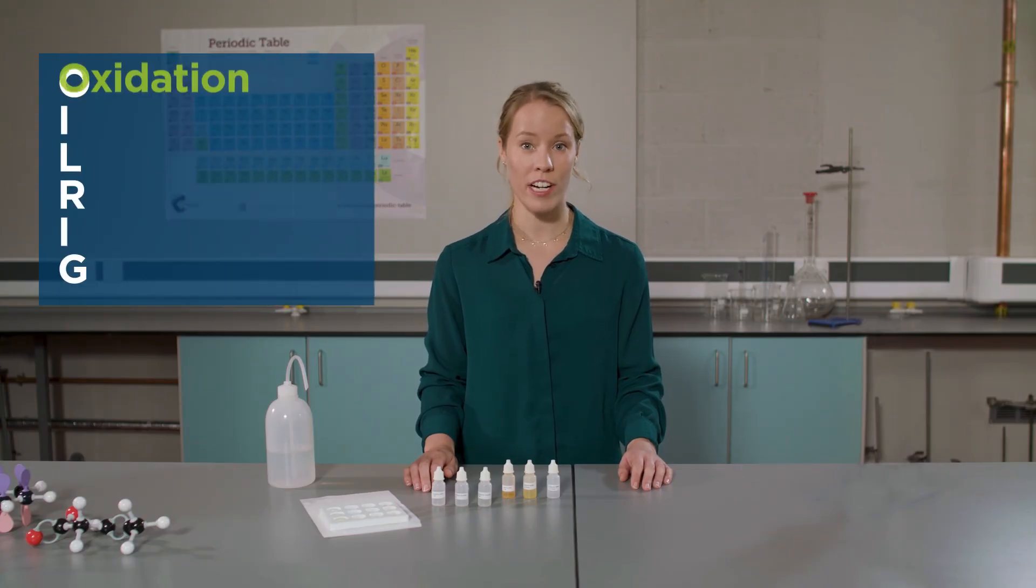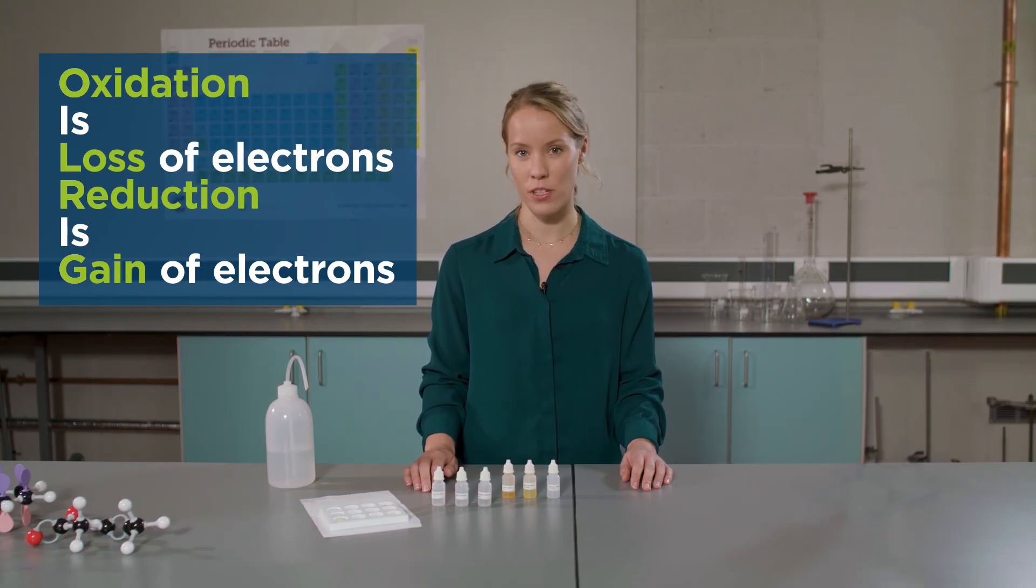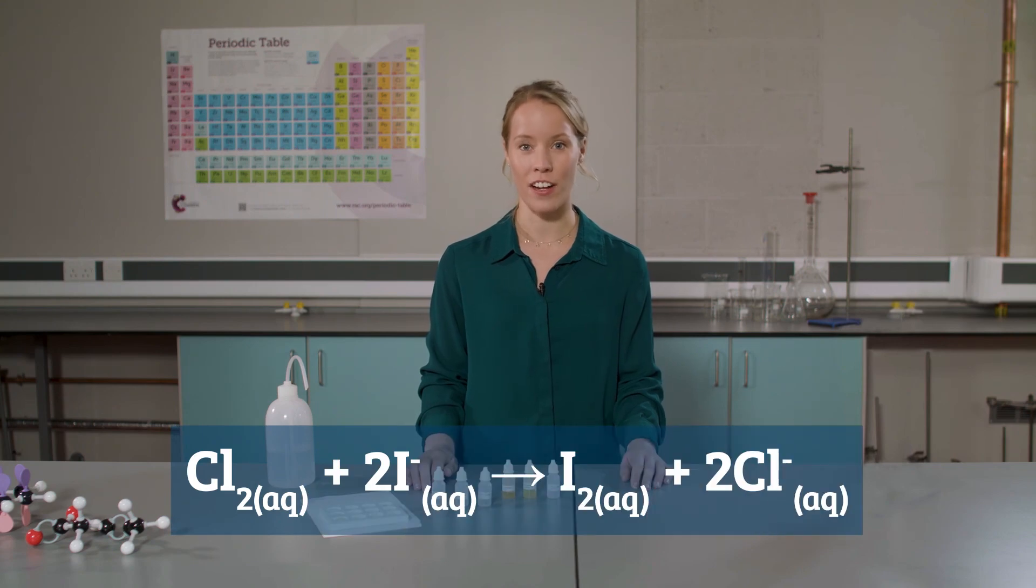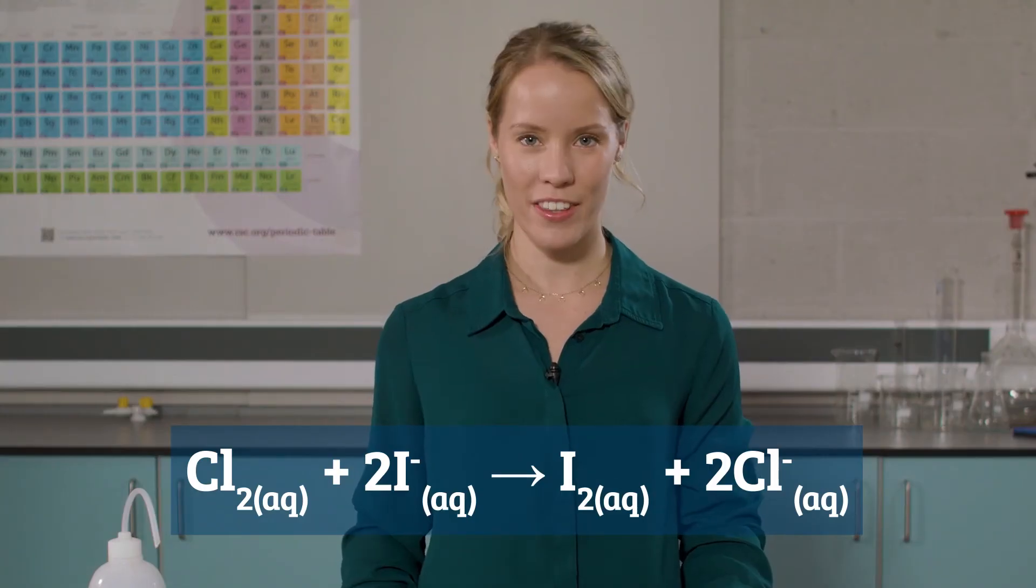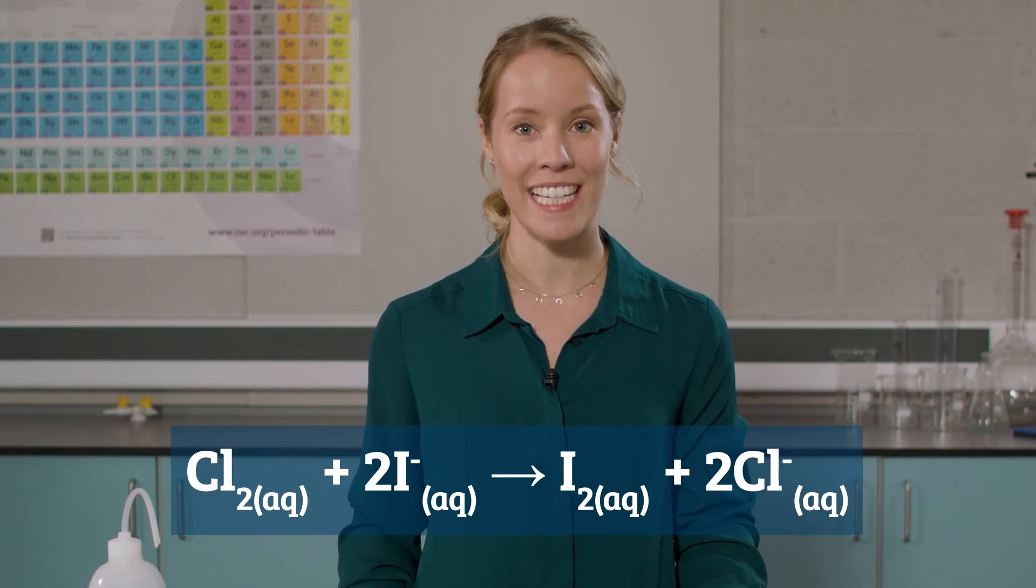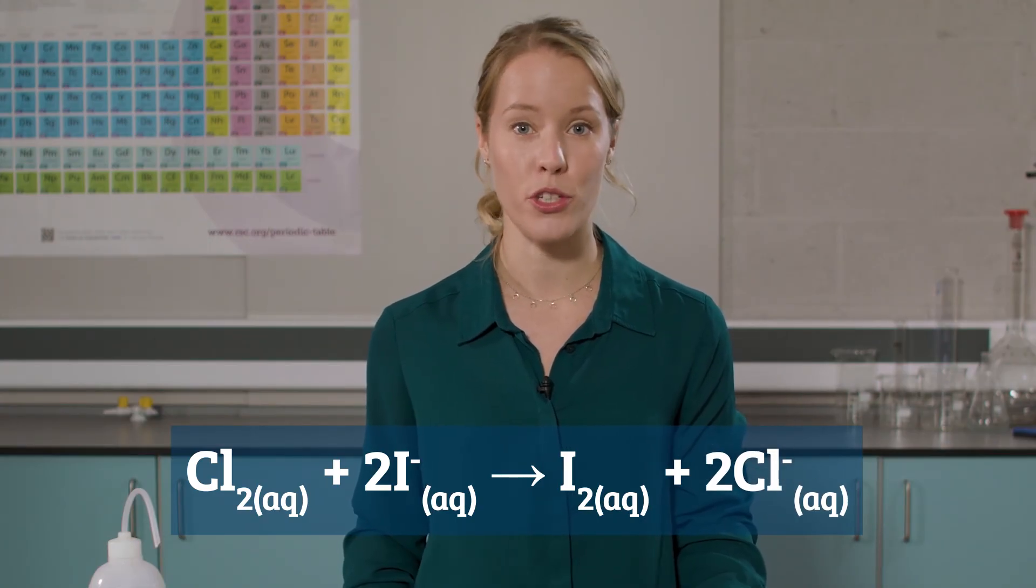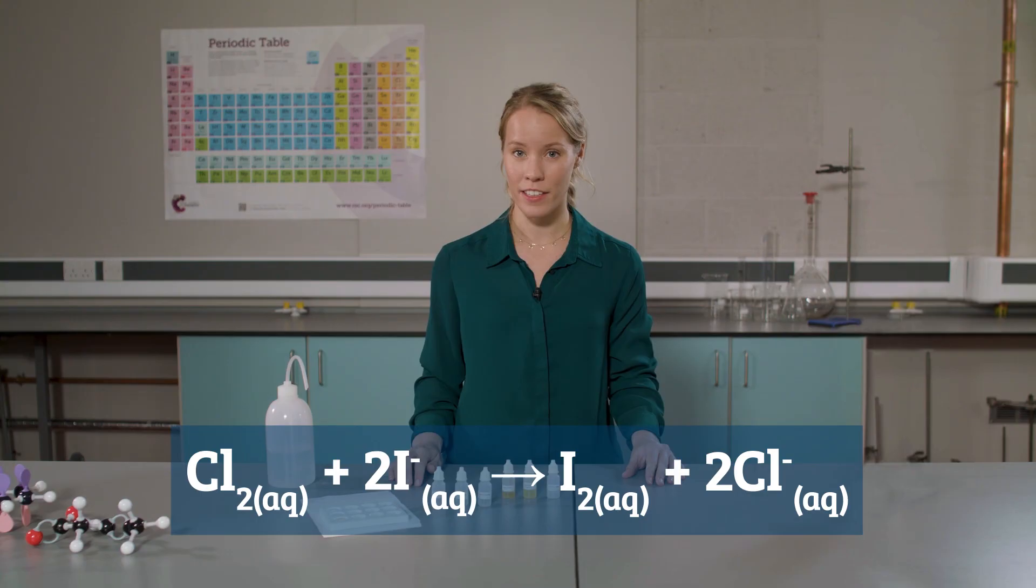A redox reaction is a reaction where both oxidation and reduction occur at the same time. A redox reaction is easier to spot if we have it written out in an ionic equation. By looking at the ionic equation, we can see that each chlorine atom in the chlorine molecule has gained an electron to become a chloride ion. Therefore, chlorine has been reduced. Each iodide ion has lost an electron to form two iodine atoms, which combine together to form an iodine molecule. Therefore, iodine has been oxidised.